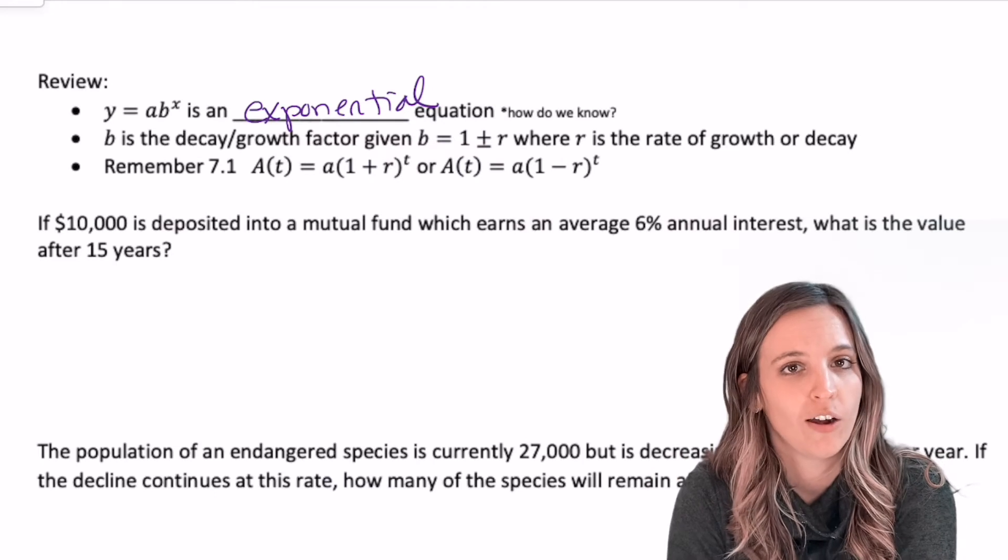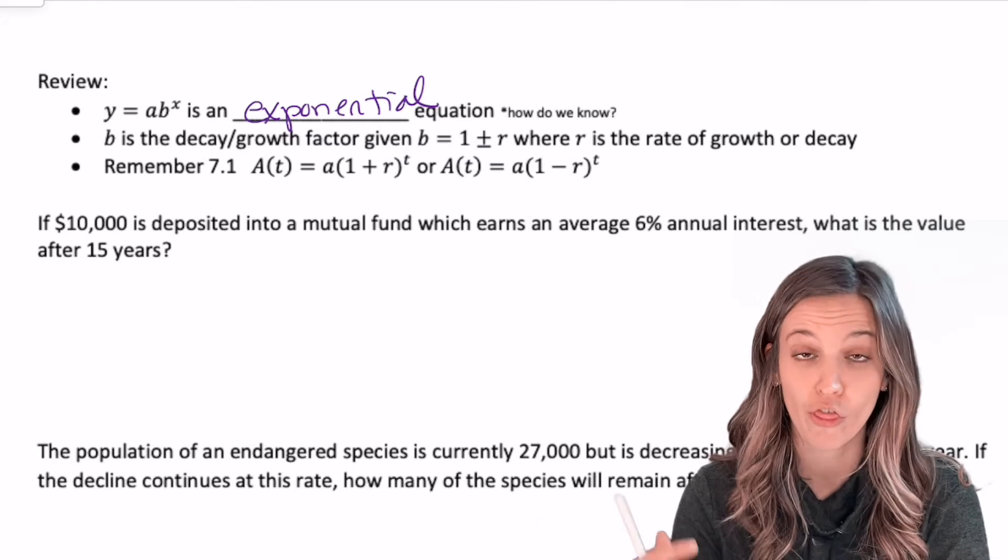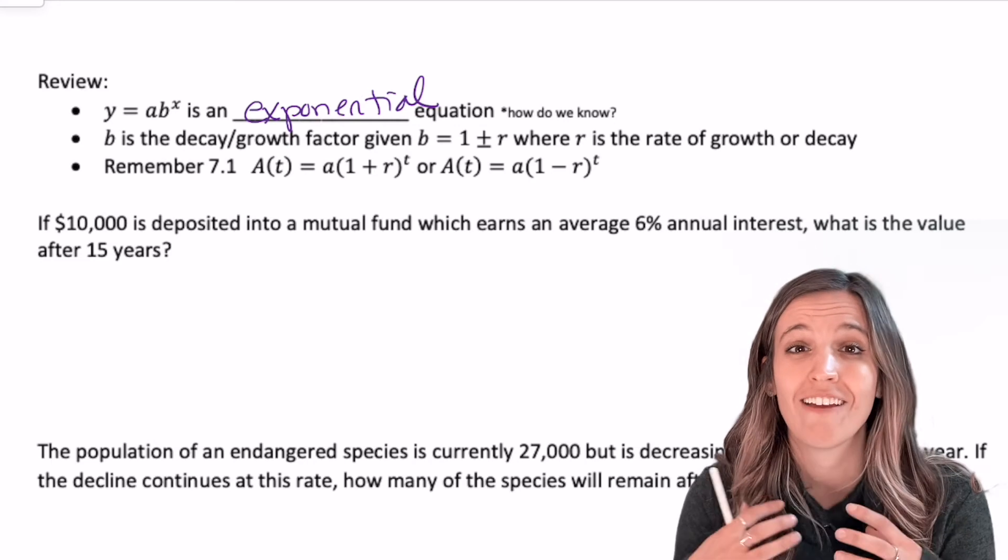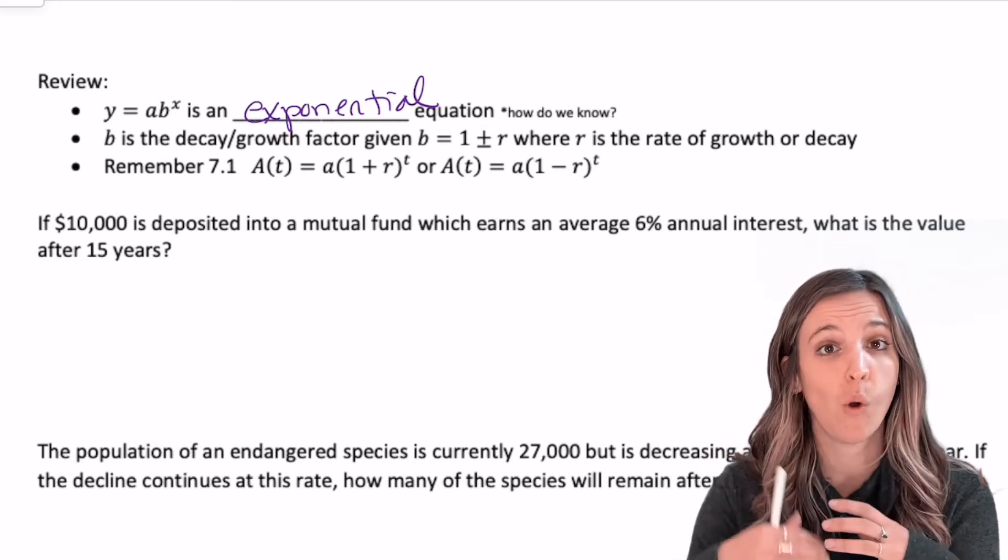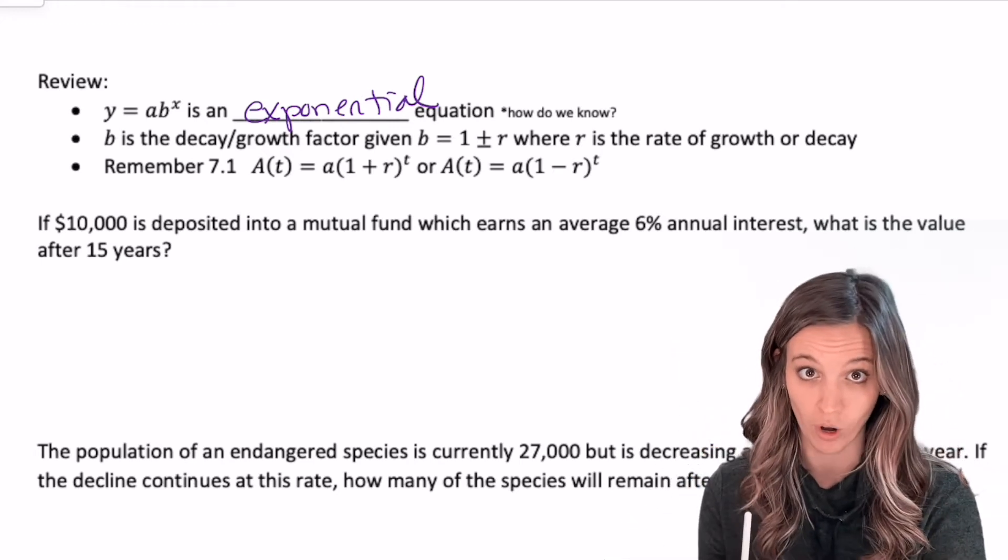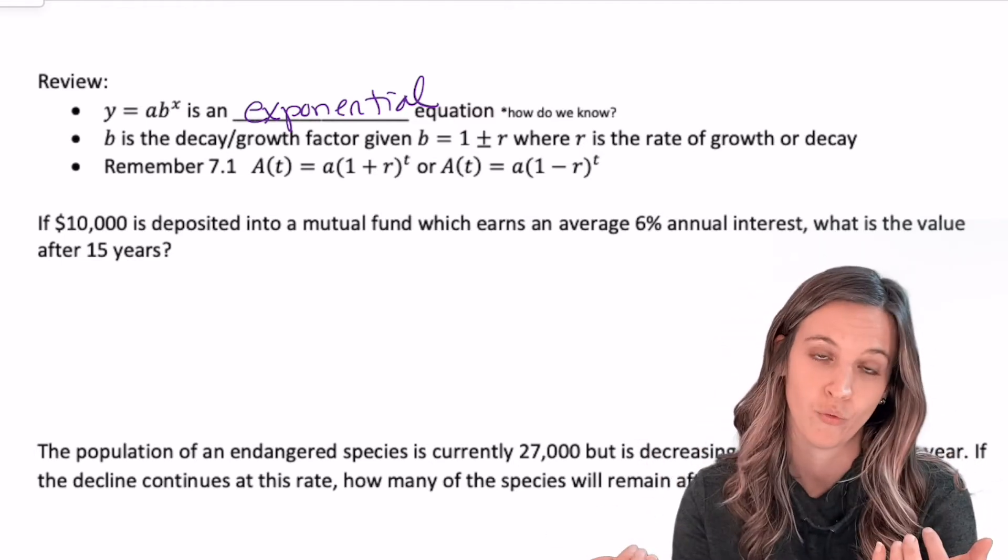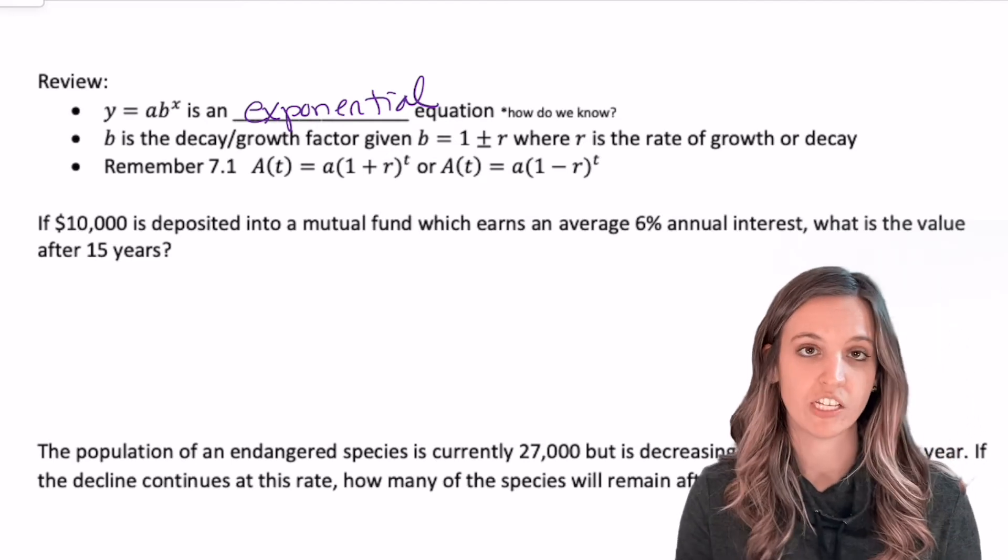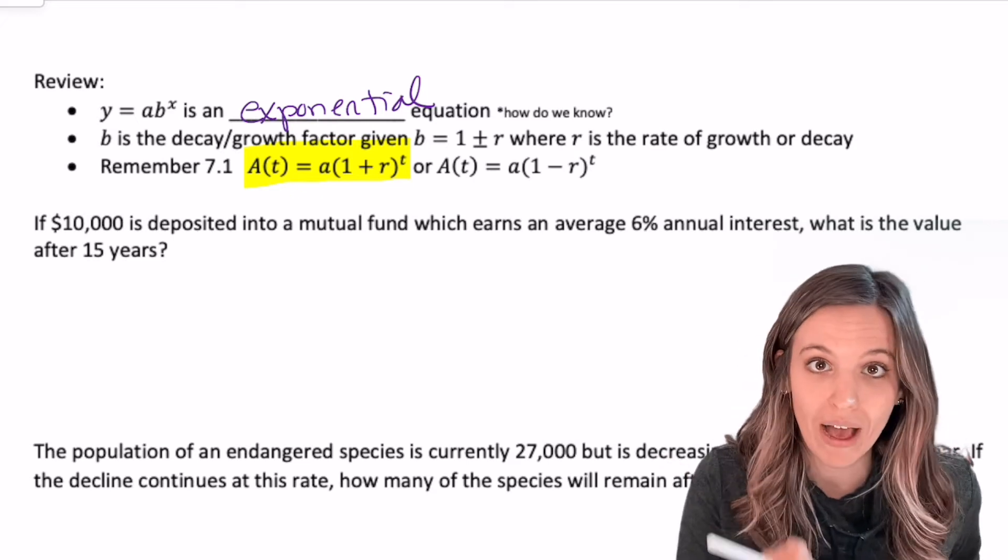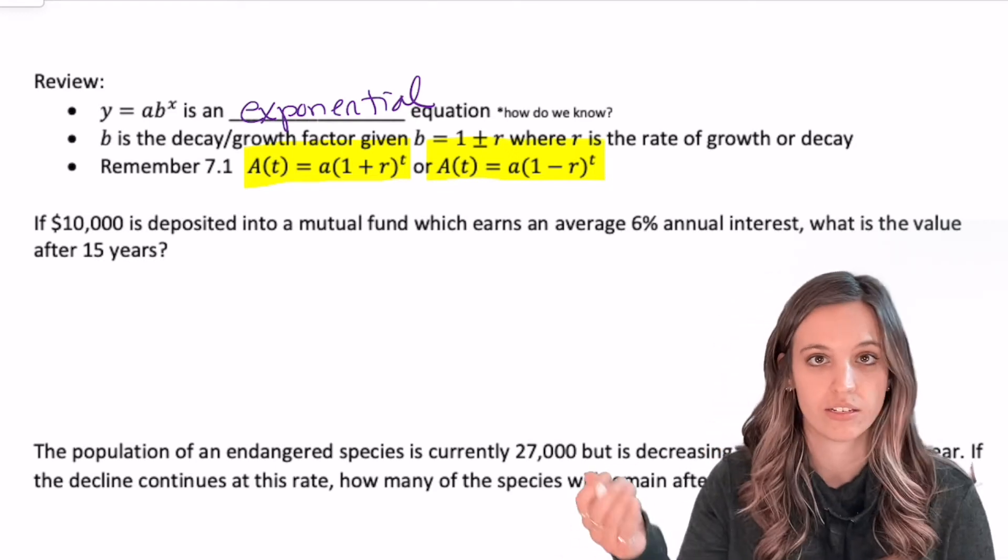Let's review what we've learned so far. We know that these exponential functions take the form of y equals A times B to the x power. That's an exponential equation. We also know that B is the growth or decay factor. So that means that B can be written as 1 plus R where R is the rate of increase in decimal form for growth or 1 minus R where R is the rate of decrease in decimal form. So the basic forms of both of these functions could be A of T equals A, that's the initial amount times 1 plus R to the T for growth and then A times 1 minus R to the T for decay.